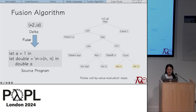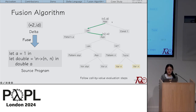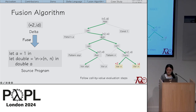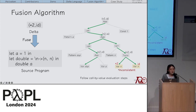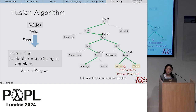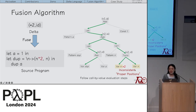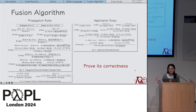Using a tree to represent the program, the fusion algorithm follows call-by-value evaluation starting from the root. It propagates the delta through function applications and decomposes it at data structures. Propagation stops when a variable is updated by inconsistent deltas — these are the proper positions. For example, multiply-2 is embedded to the left occurrence of n (giving n*2) and identity to the right (still n), producing the updated program. The algorithm's correctness is formally proven.